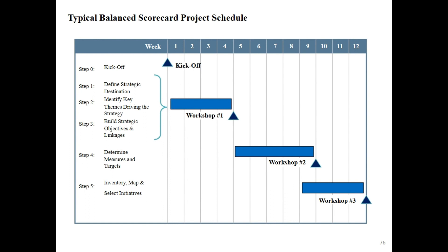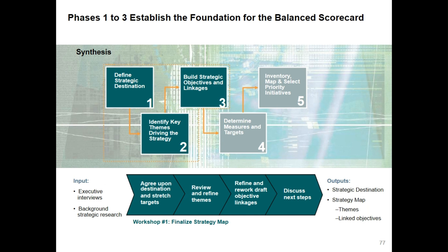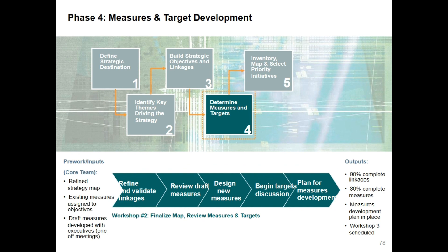Phases 1 to 3 establish the foundation for the balanced scorecard. Workshop 1 finalizes the strategy map; inputs are executive interviews and background strategic research, and outputs are the strategic destination and strategy map. Phase 4 is for measures and target development; inputs are a refined strategy map, existing measures assigned to objectives, and draft measures developed with executives in one-on-one meetings; outputs are 90% complete linkages, 80% complete measures, a measures development plan, and Workshop 3 scheduled.